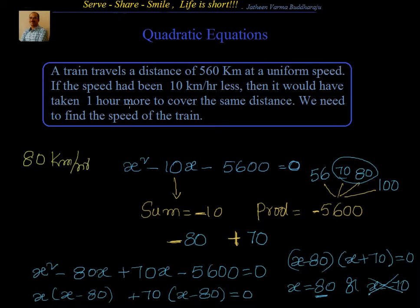That means the uniform speed is 80 km per hour, so the speed after reduction is 70 km per hour. Let's cross check this. A train travels a distance of 560 at uniform speed of 80, so the time taken is 560 by 80, that is 7 hours. In the second scenario, if the speed had been 10 km less, that is 70 km, now it is 560 divided by 70, that equals 8 hours. You can see the difference between them is 1 hour, so our solution is correct.